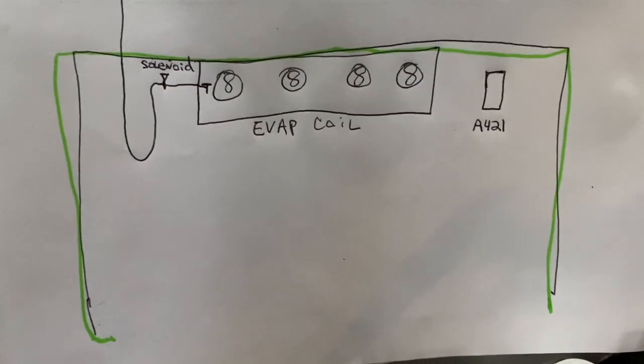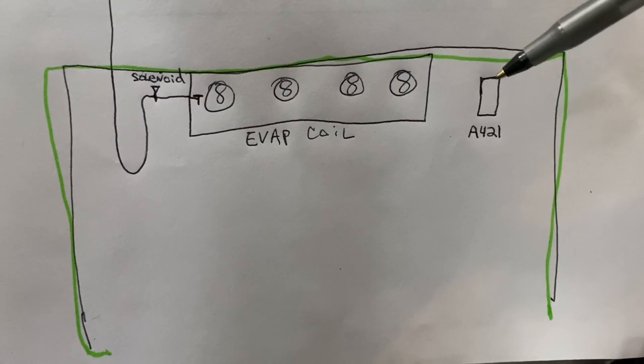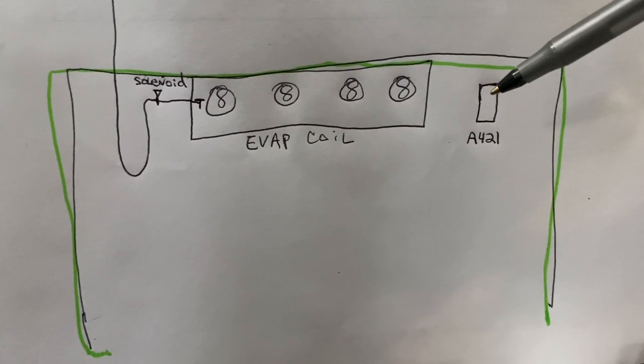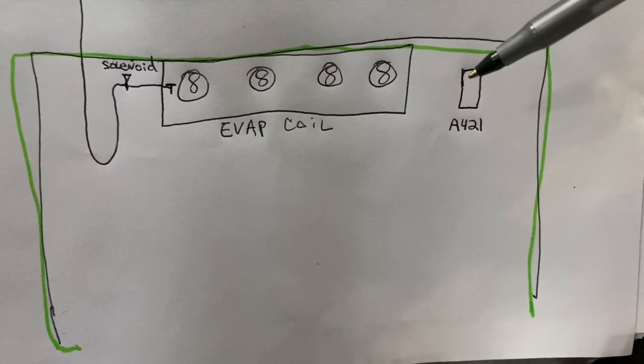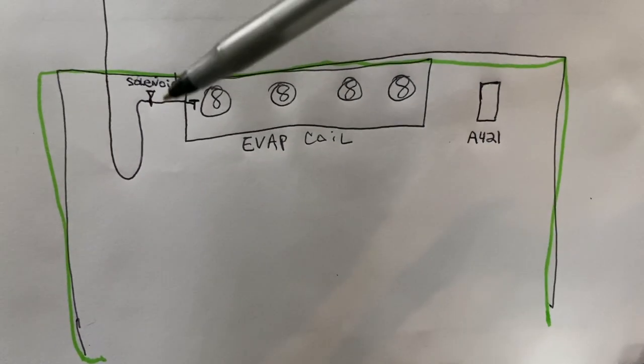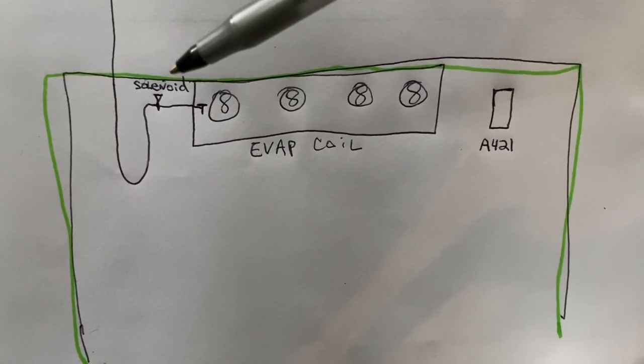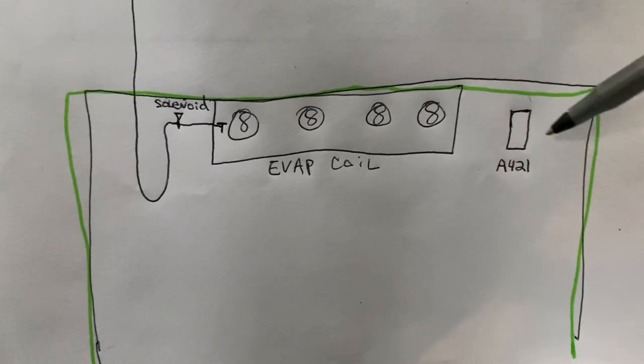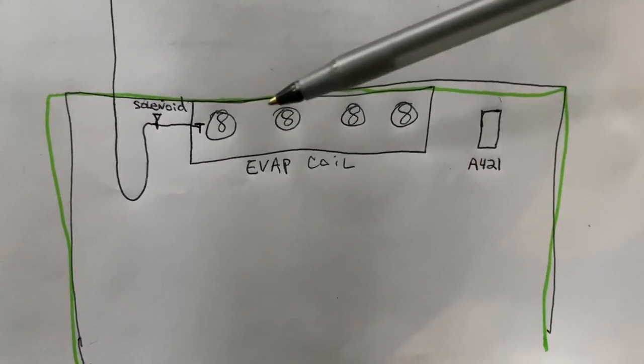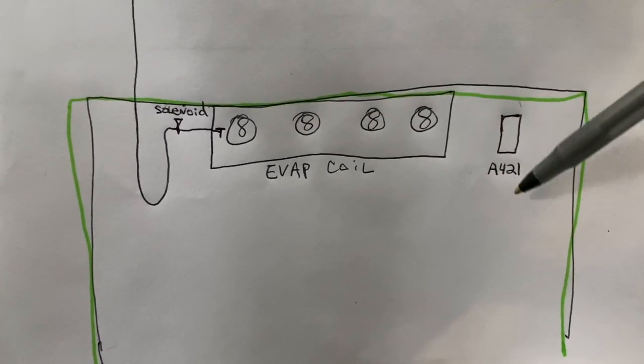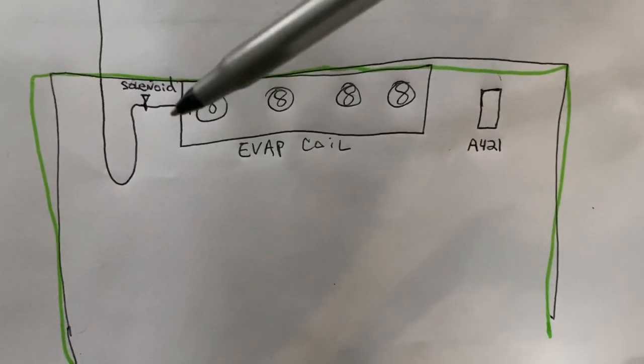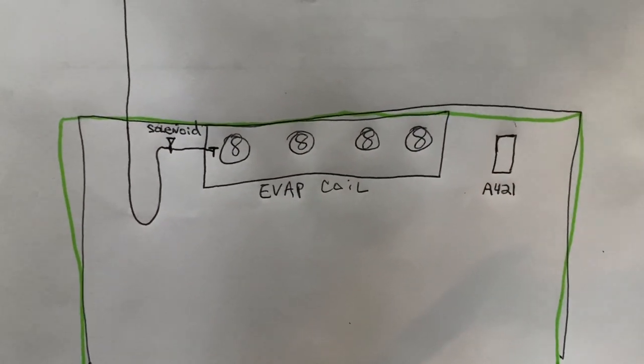On this very basic drawing we're going to add an A421 ABD-O2C thermostat because I like them so much, and we have a liquid line solenoid valve. And that's it! You got a coil with your evap fans, a thermostat and a solenoid valve. That's where we're going to start.